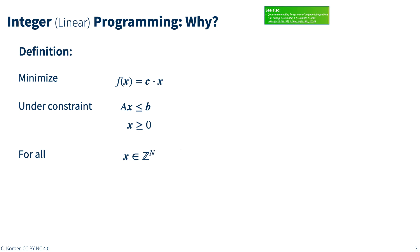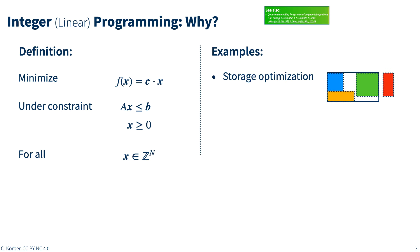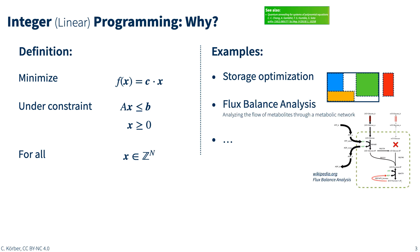Now, what is integer linear programming? You can basically view it as minimizing a certain objective function f of x equal to c dot x, where both c and x are vectors, under a given constraint Ax smaller or equal to b, which is a matrix equation. x itself is an integer larger or equal to zero. To mention an example, you could picture storage optimization: you have a given volume and some objects you want to fit in it. The importance of these objects would be the c vector, while the constraint is dictated by the size of the volume and the objects.